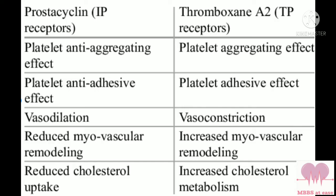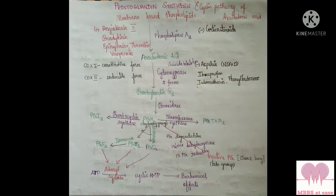The main difference between prostacyclin and thromboxane are their platelet effects: prostacyclin has a platelet anti-aggregating effect while thromboxane has a platelet aggregating effect. Prostacyclin is synthesized in vascular endothelium whereas thromboxane is synthesized in platelets. Prostacyclin prevents platelet aggregation by acting as a vasodilator; on the other hand, thromboxane promotes platelet aggregation by acting as a vasoconstrictor.